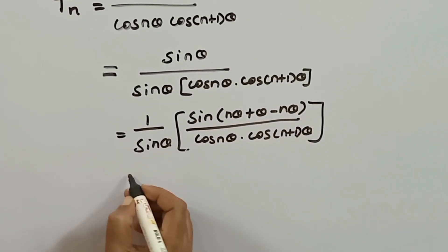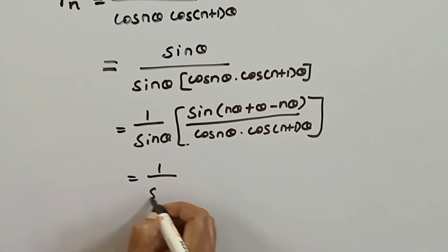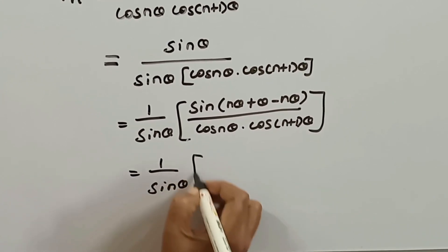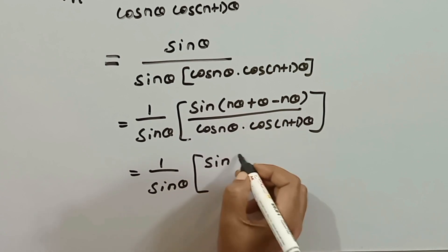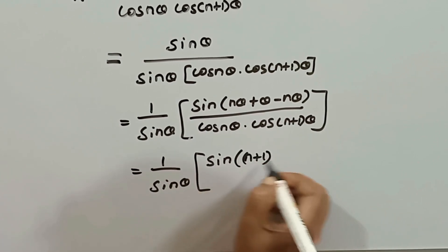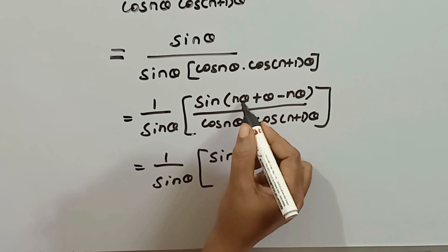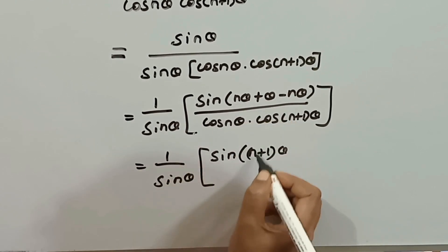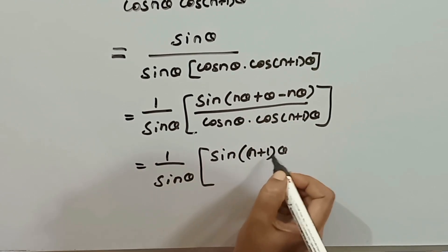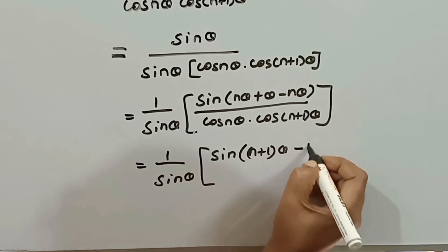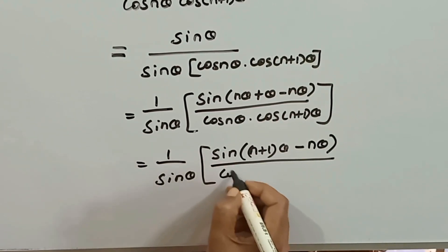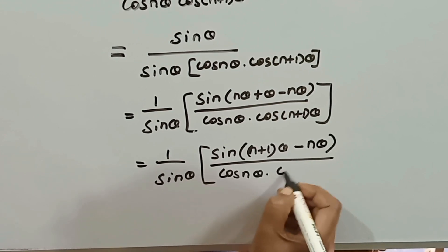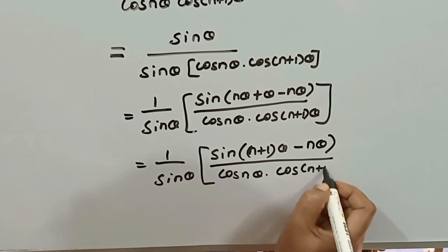So we mark the terms. In the next step, we mark 1/sin(θ) and fix it. We change the sine expression and mark 2 terms with theta. We mark (n+1)θ so that theta equals 1·theta. The first term is (n+1)θ, then we mark (n+1)θ minus nθ, divided by cos(nθ)·cos((n+1)θ).